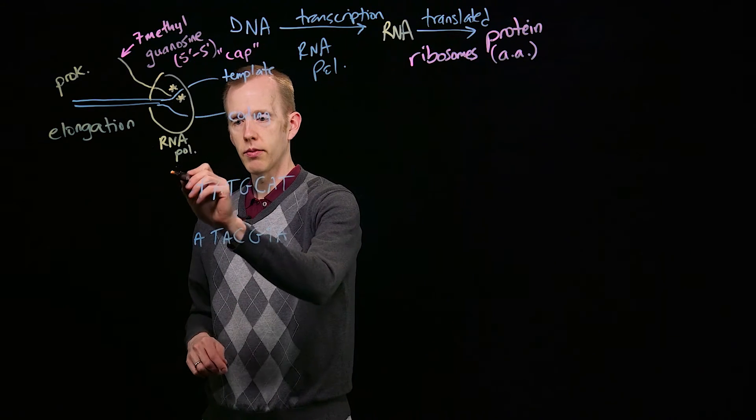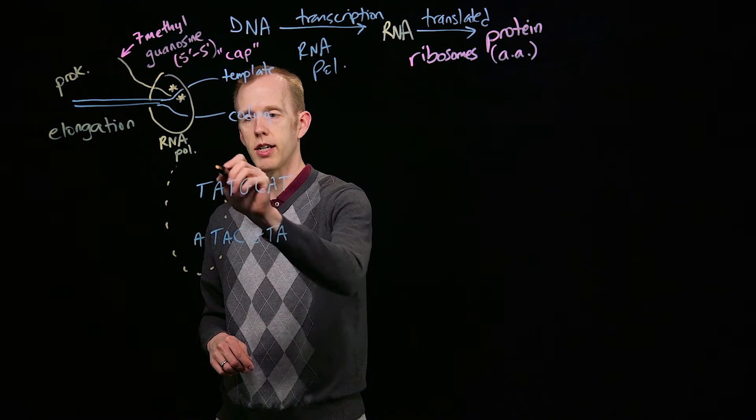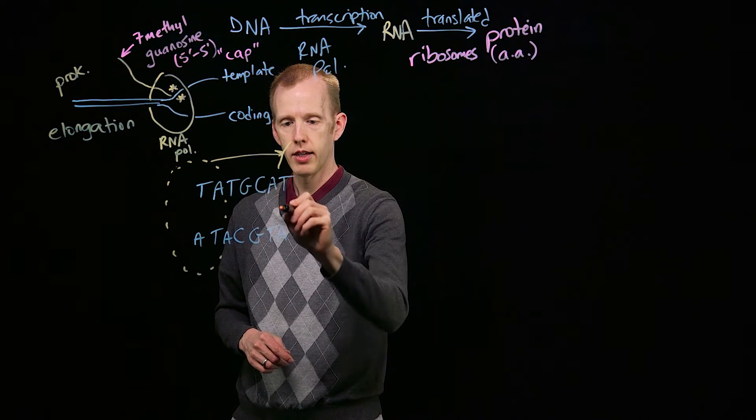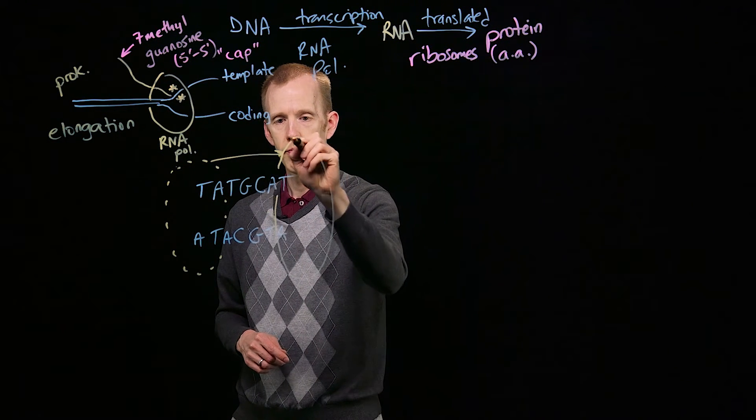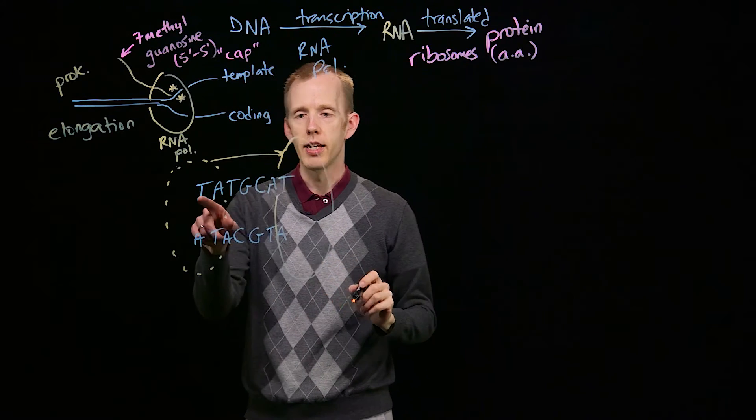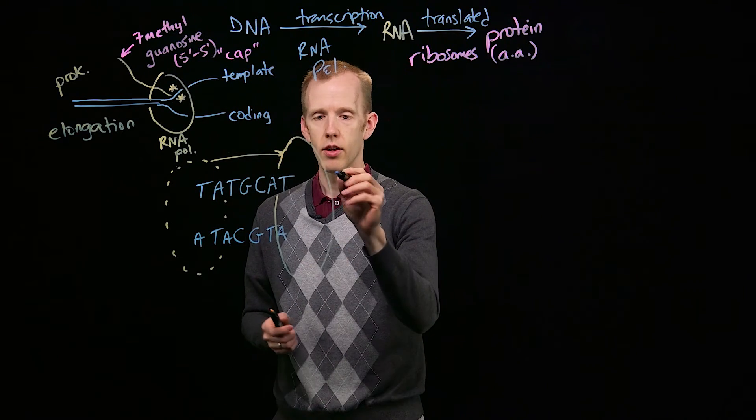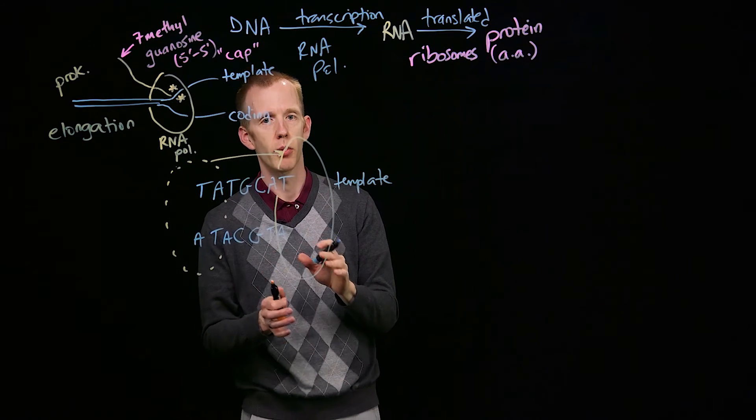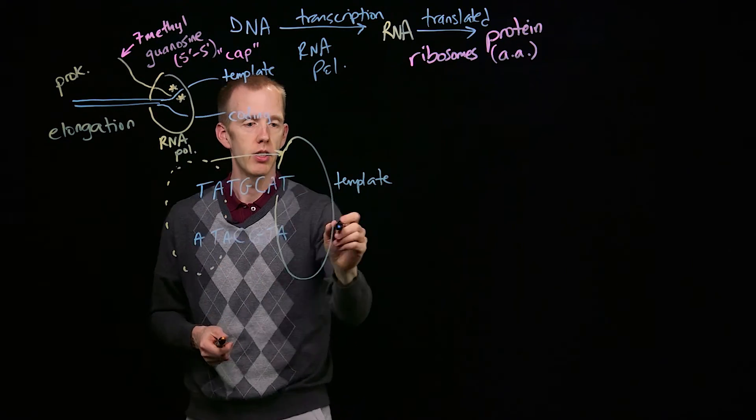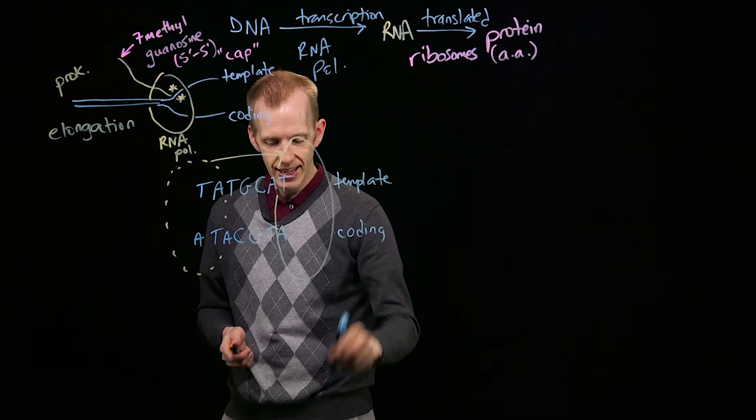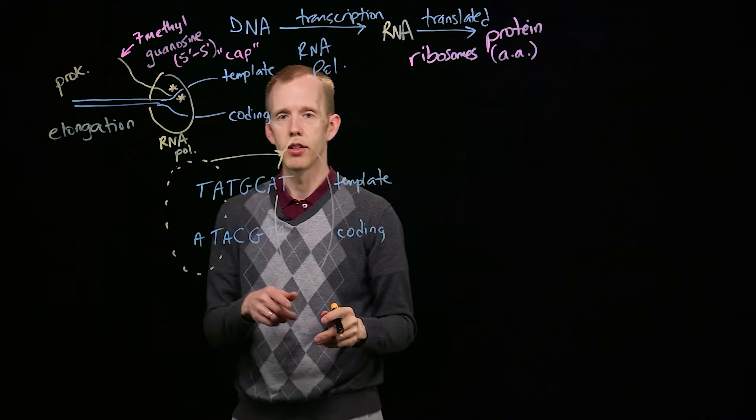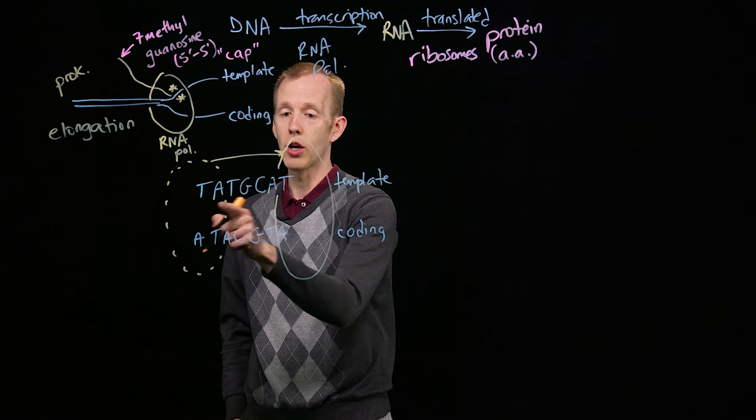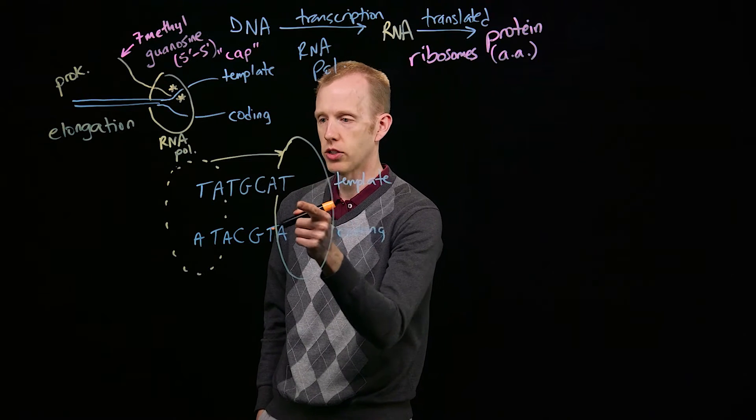When RNA polymerase starts here and reads in this direction and winds up here, it's reading the template strand. There's no way to know in advance which strand RNA polymerase is going to use as the template strand. But the template strand is the strand that the RNA polymerase molecule is creating base pairing with.